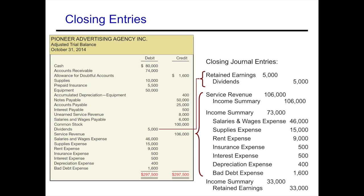We start by closing dividends directly to retained earnings. Dividends carry a debit balance, so to eliminate it you credit dividends and debit retained earnings. Retained earnings carries a normal credit balance, so debiting it decreases retained earnings — which is exactly what we expect dividends to do. The puzzle pieces fit together.